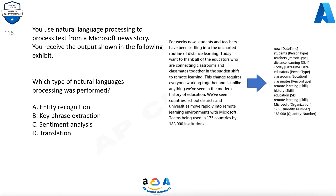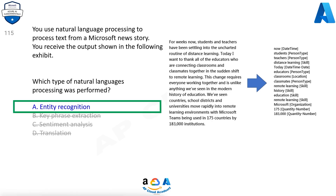Question 115. You use natural language processing to process text from a Microsoft news story. You receive the output shown in the following exhibit. Which type of natural language processing was performed? A. Entity recognition. B. Key phrase extraction. C. Sentiment analysis. D. Translation.